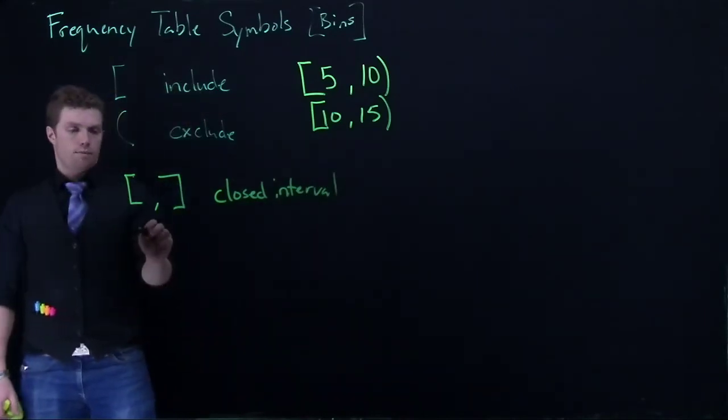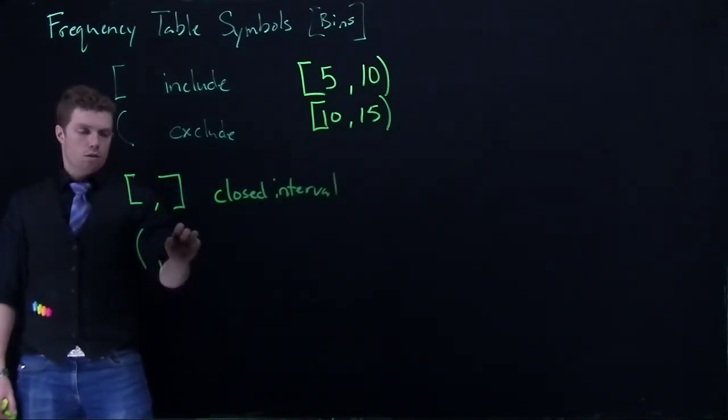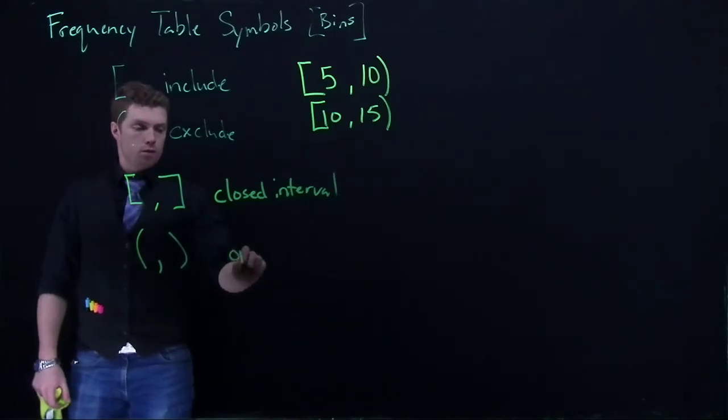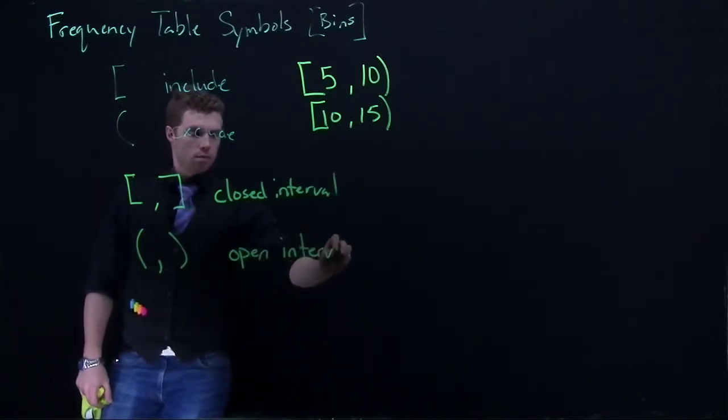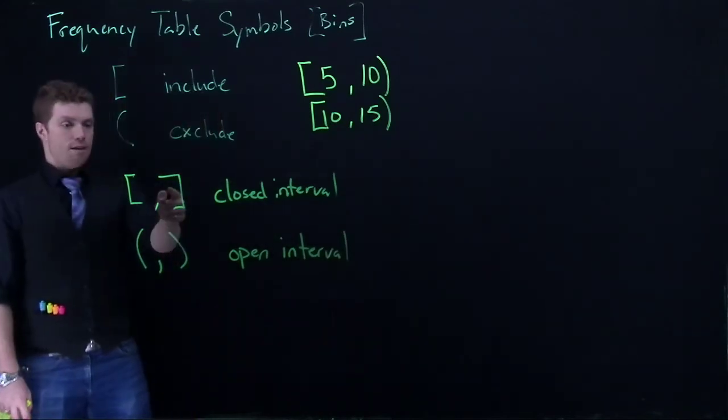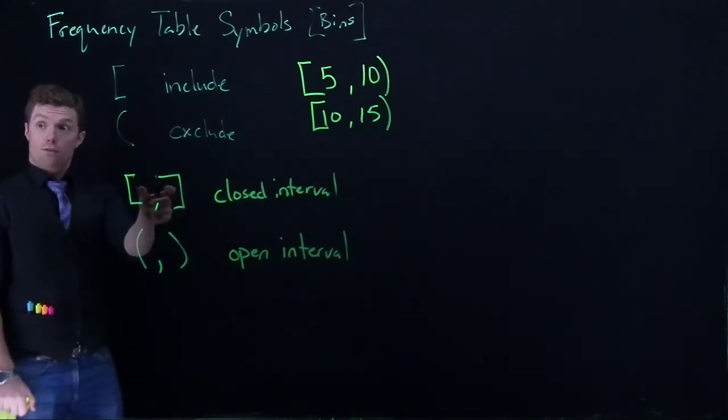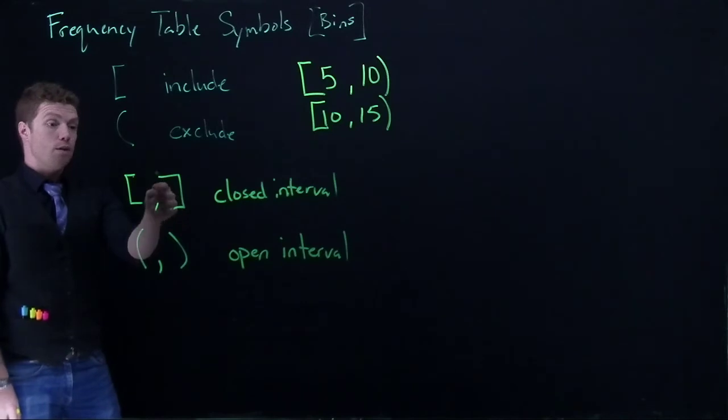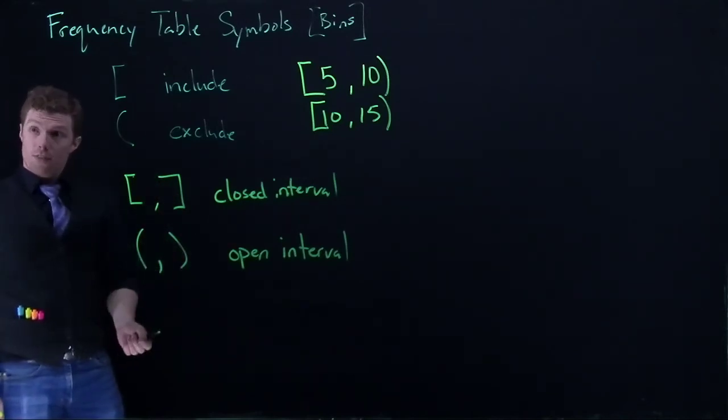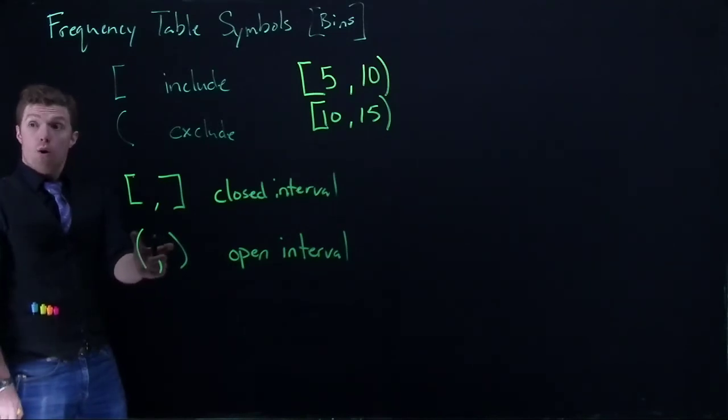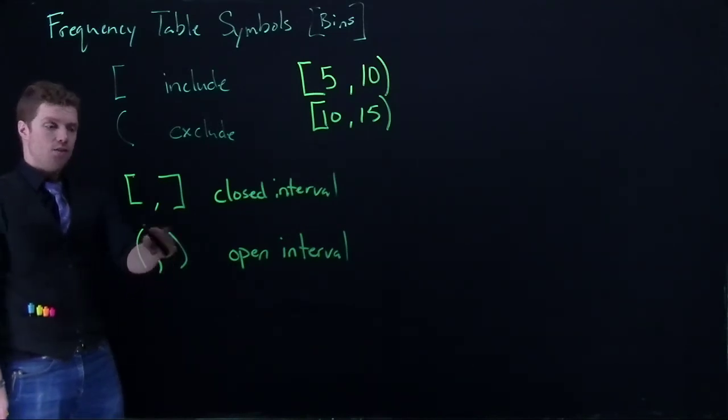And you can also see something like this, where this would be called an open interval. So, if we had five and ten in here, that means if something was measured as five or ten, we both counted them here. If five and ten were in both of these parentheses, then we would exclude both five and ten from this count.